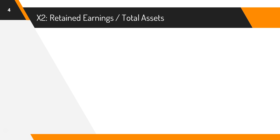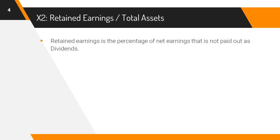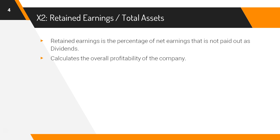X2 is retained earnings divided by total assets. Retained earnings is the percentage of net assets that isn't paid out as dividends. If a company has little or no retained earnings, it has to get money from somewhere to continue its operations — either from debt or dilution. This ratio calculates the overall profitability of the company. If the company has high retained earnings, it is retaining cash for operations instead of paying out dividends.